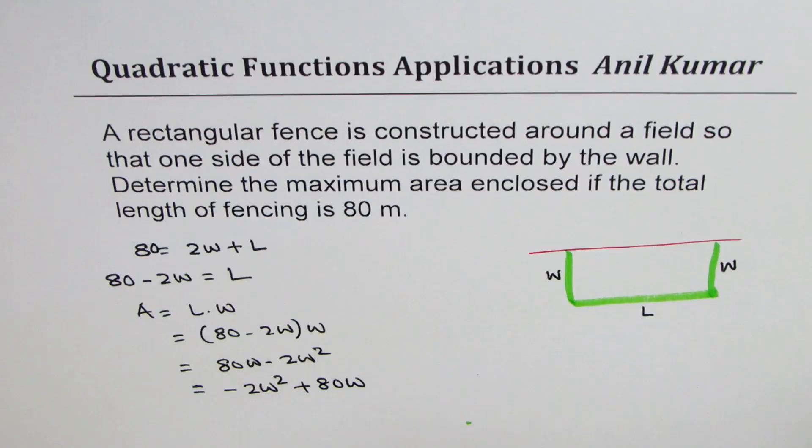Rearranging and writing we get minus 2W² plus 80W. So that is the quadratic equation which represents the area in terms of width.